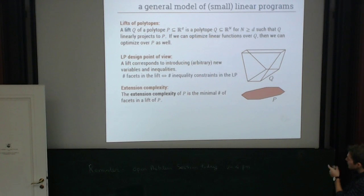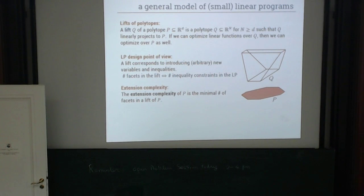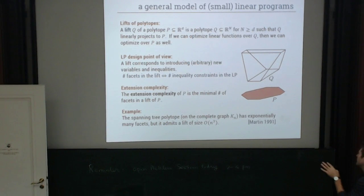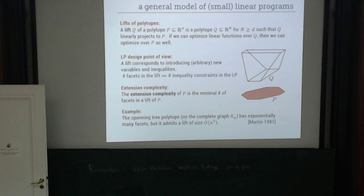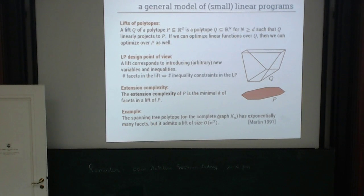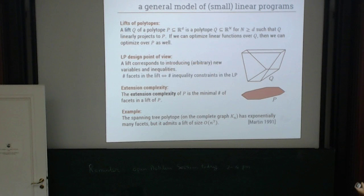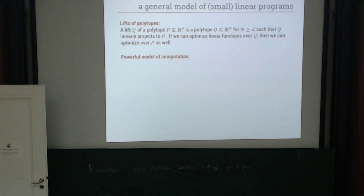We call the extension complexity of P the minimal number of facets in any lift of P — you can think of this as a complexity measure for the polytope. As an example, the spanning tree polytope has exponentially many facets, but there is a lift of size order N cubed — so a lift with only order N cubed facets. This appears in a paper of Martin. So you do get some power from these things, and there are many more examples available in the summer school lectures online.